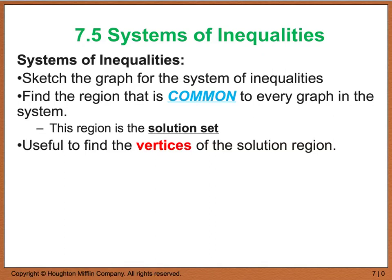Now let's look at the scenario where we have a system of inequalities, meaning more than one equation. We sketch the graph for each equation and then find a region that is common to every graph — the overlapping shaded area. We call this common area the solution set. Sometimes it's useful to find the vertices, which are the points of intersection that enclose the shaded region.